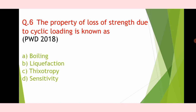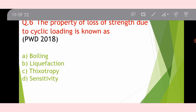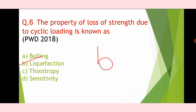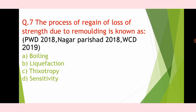The property of loss of strength due to cyclic loading is known as cyclic/earthquake/seismic loading effect. The process of regaining of lost strength due to remoulding with passage of time is known as thixotropy.